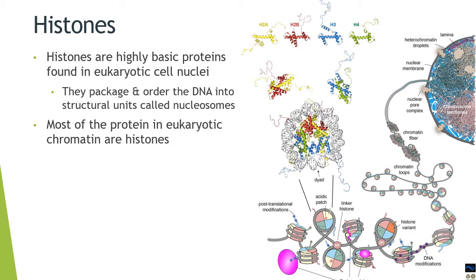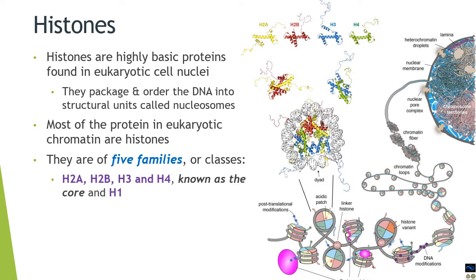Usually 80 to 90 percent of the proteins associated with the chromatin are histones. They are categorized into five families or classes: H2A, H2B, H3, and H4. These four are called the core proteins. Then there is a linker protein histone called H1.